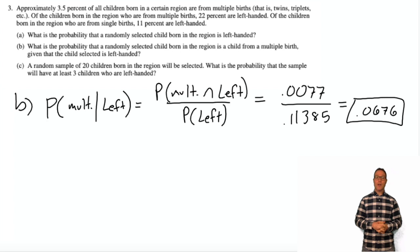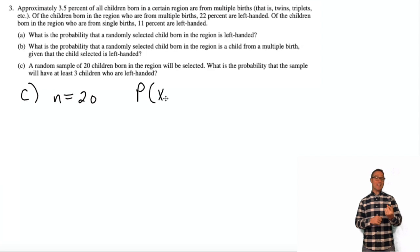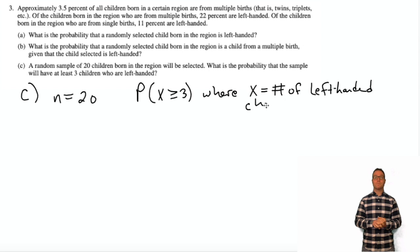Let's try Part C. A random sample of 20 children is to be selected. What's the probability that the sample will have at least three children who are left-handed? So the sample size is 20. We want the probability at least means greater than or equal to. So I'm going to write that as X is greater than or equal to 3, and I also have to define X. You can't just use variables without defining them. So X is going to be the number of left-handed children out of a sample of 20. Okay, so that's my definition for X. Now, this is a binary situation. Binomial probability situation.